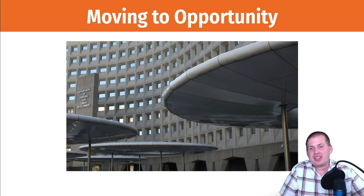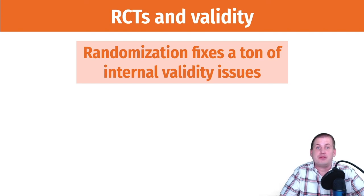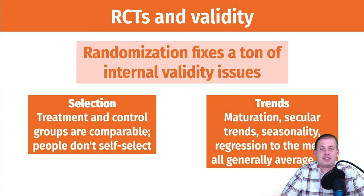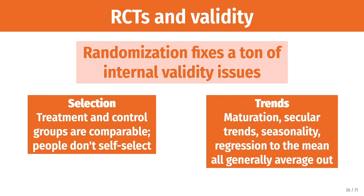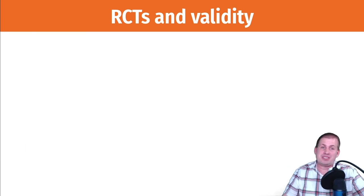RCTs are great because they fix all sorts of internal validity issues. The Moving to Opportunity findings are sound and believable because it was randomly assigned — nobody self-selected into groups. RCTs are great at eliminating selection issues and also fix trend-based threats to validity: maturation, secular trends, seasonality, and regression to the mean all happen equally in both treatment and control groups, so they average out.